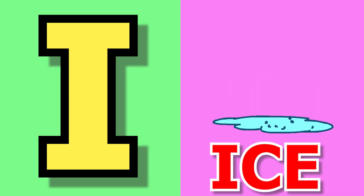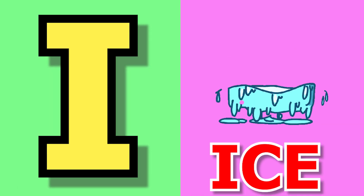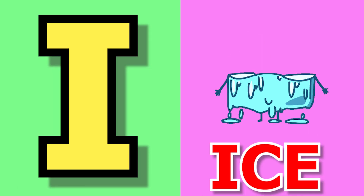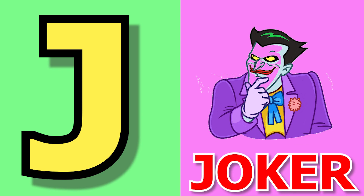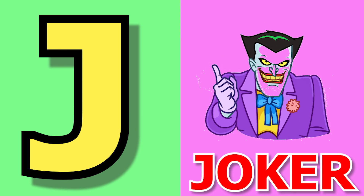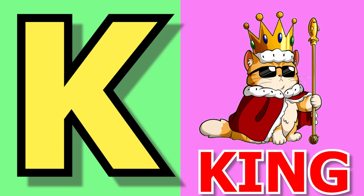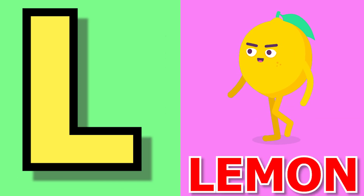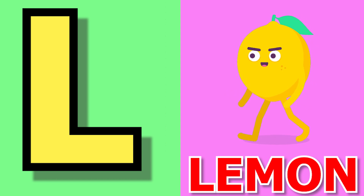I for ice, ice means birth. J for joker, joker means joker. K for king, king means raja. L for lemon, lemon means nimbu.